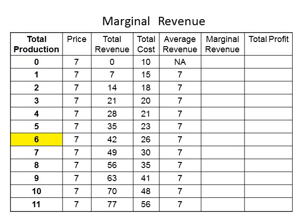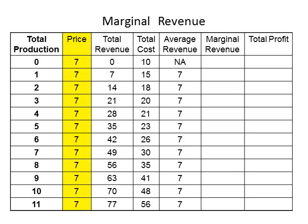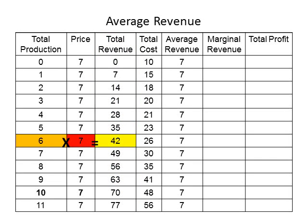For example, six in the total production column represents a production of six printers. The price column represents the price of the printers. In our example, the printer company sells the printer for seven dollars — a very unrealistic price, but it makes the calculations easier. The next column represents the total revenue of the firm, found by multiplying total production times price. In the example, total production is six and price is five, so six times five gives a total revenue of 42.